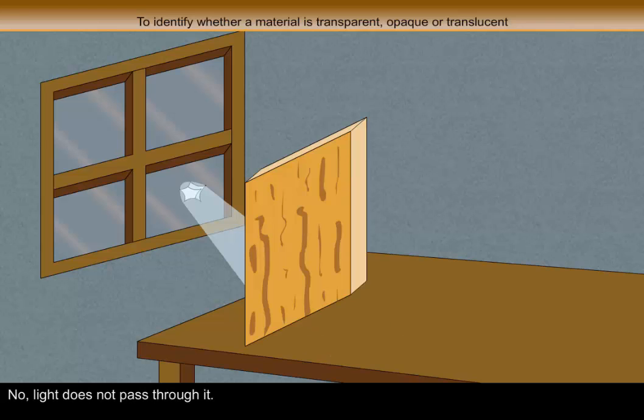Now place the plywood sheet. No, light does not pass through it. So the material is opaque.